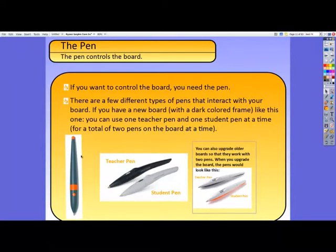The board usually comes with two sets of pens, and you can only use one pen at the board at a time. If you have a newer board, which is the Active 500 Pro or newer, you will have two sets of pens. It doesn't matter which pen is at the board. Both pens will do the exact same thing. One is called the teacher pen and one is called the student pen.